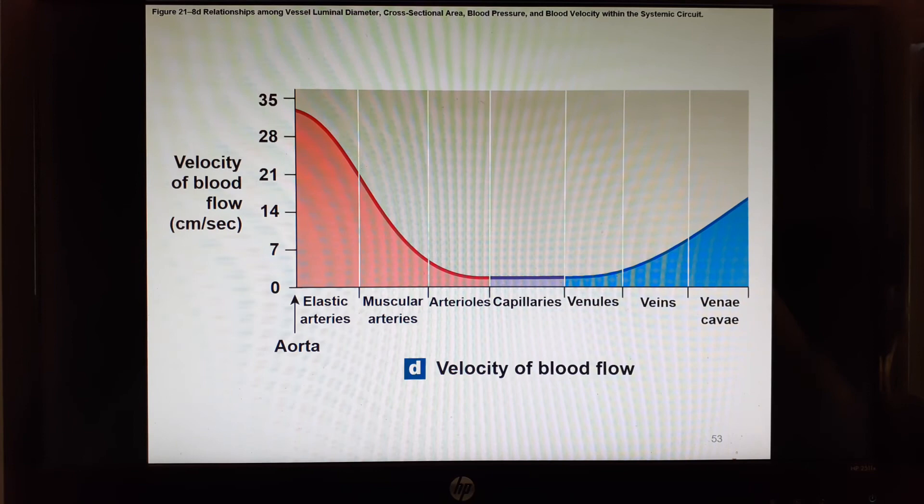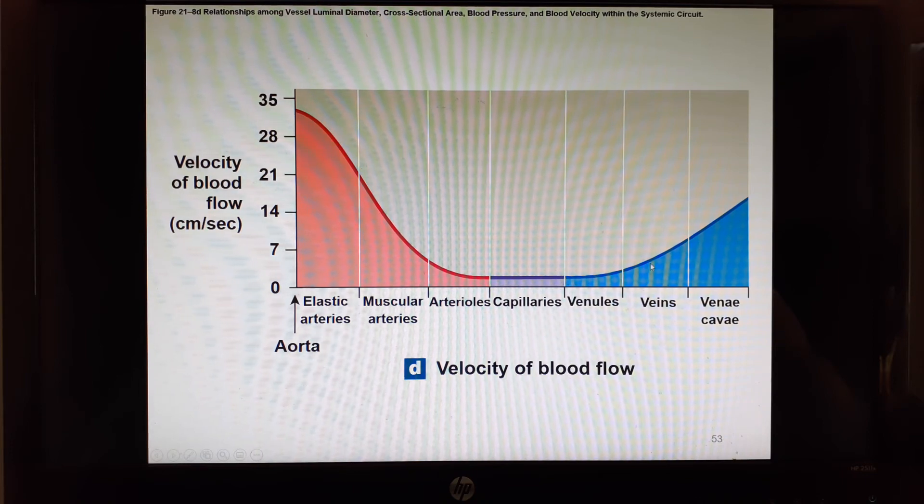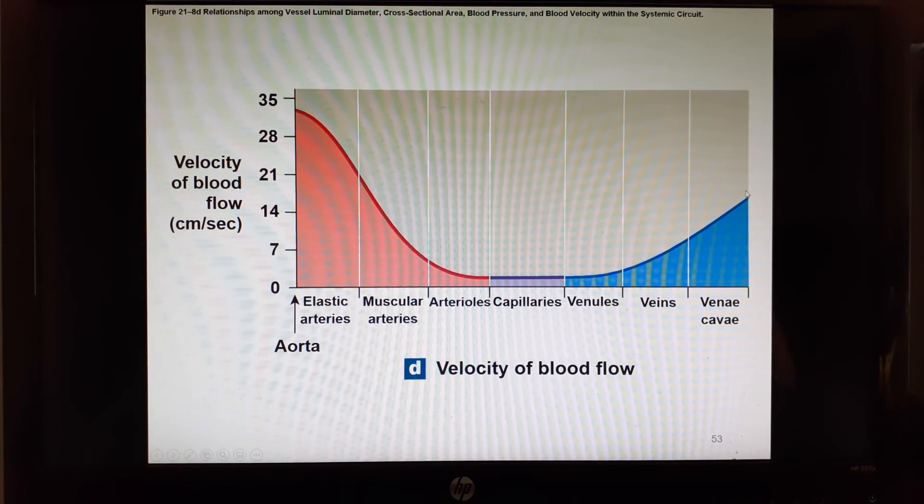How fast does the blood move? It moves pretty fast in your large arteries, slows down a bit in your muscular arteries, slows way down in arterioles, and then kind of holds it steady through capillaries. Then it goes kind of steady through venules. Then as we go back into veins and vena cava, it picks up speed again. Why would you want your blood flow to be slowest at the capillaries?